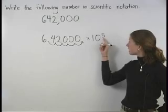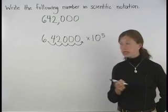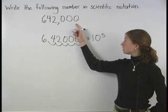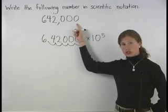Notice that the exponent is positive. This is because we would need to move the decimal point to the right in order to get back to the original number, 642,000.